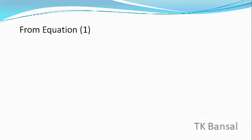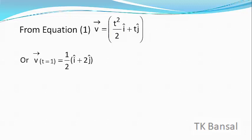As per equation 1, at t = 1 second, V vector = (1/2) î + ĵ, or equivalently V vector = (1/2)(î + 2ĵ) m/s. This matches choice C, and hence choice C is also correct.